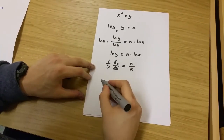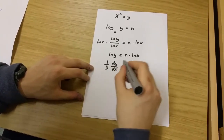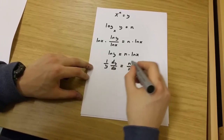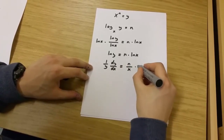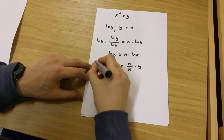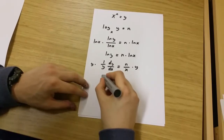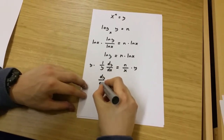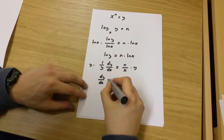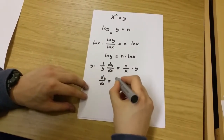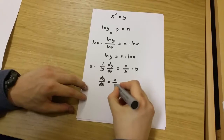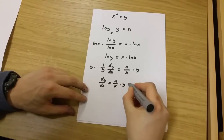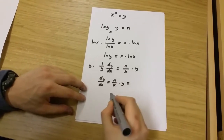Now, what I'm going to do is multiply both sides of this equation by y. So I'm going to be left with dy over dx equals n over x multiplied by y.